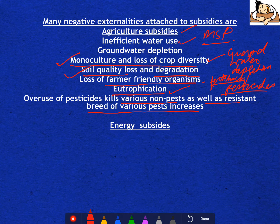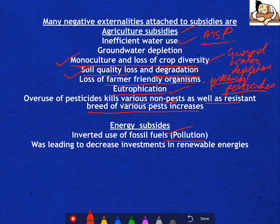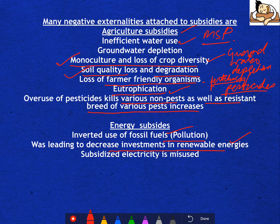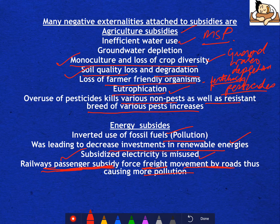The negative effects of energy subsidies include pollution and increased use of fossil fuels. They also lead to decreased investment in renewable energies, though the government has now started promoting renewable energy somewhat. Subsidized electricity is misused extensively. Also, in railways there is cross-subsidization — freight is very expensive while passenger fares are very cheap. So freight movement shifts to roads, which causes more pollution and accidents. This is also a negative externality.